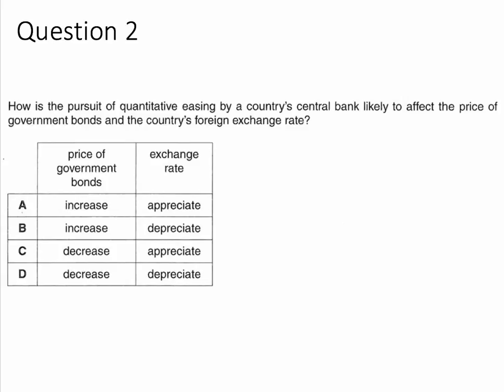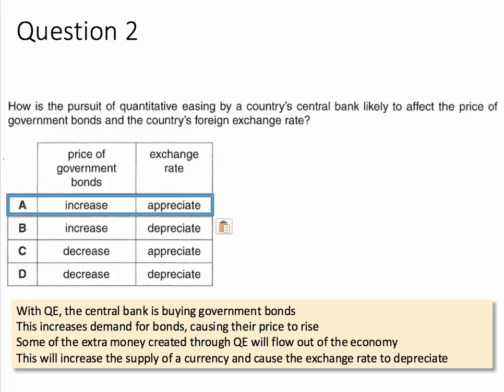The answer to question two is A: the price of bonds is likely to go up, and the exchange rate will depreciate. With QE, the central bank is buying government bonds. This increases the demand for bonds, causing their price to rise. Some of this extra money created through QE will then flow out of the economy, increasing the supply of the currency and therefore causing the exchange rate to depreciate.